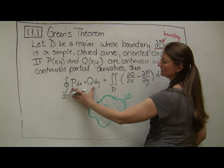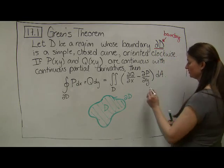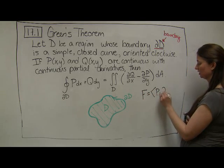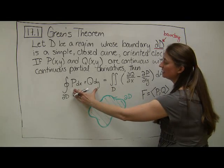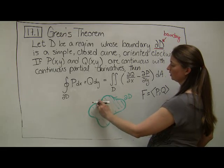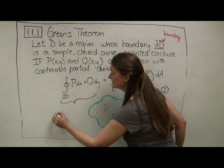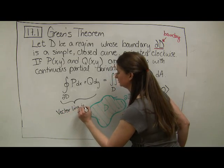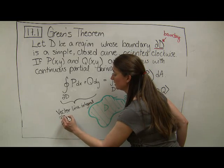So this part is telling me, essentially, if I have some vector field F that's equal to P, Q, I'm looking at the line integral, the vector line integral along the boundary. I'll write that in words. This is the vector line integral along the boundary.